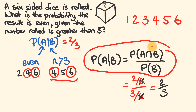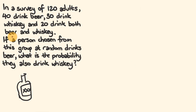Let's go through now and have a look at another example. In a survey of 120 adults, 40 people drink beer, 30 people drink whiskey, and 20 people drink both beer and whiskey. A person chosen from this group at random drinks beer — what's the probability they also drink whiskey?